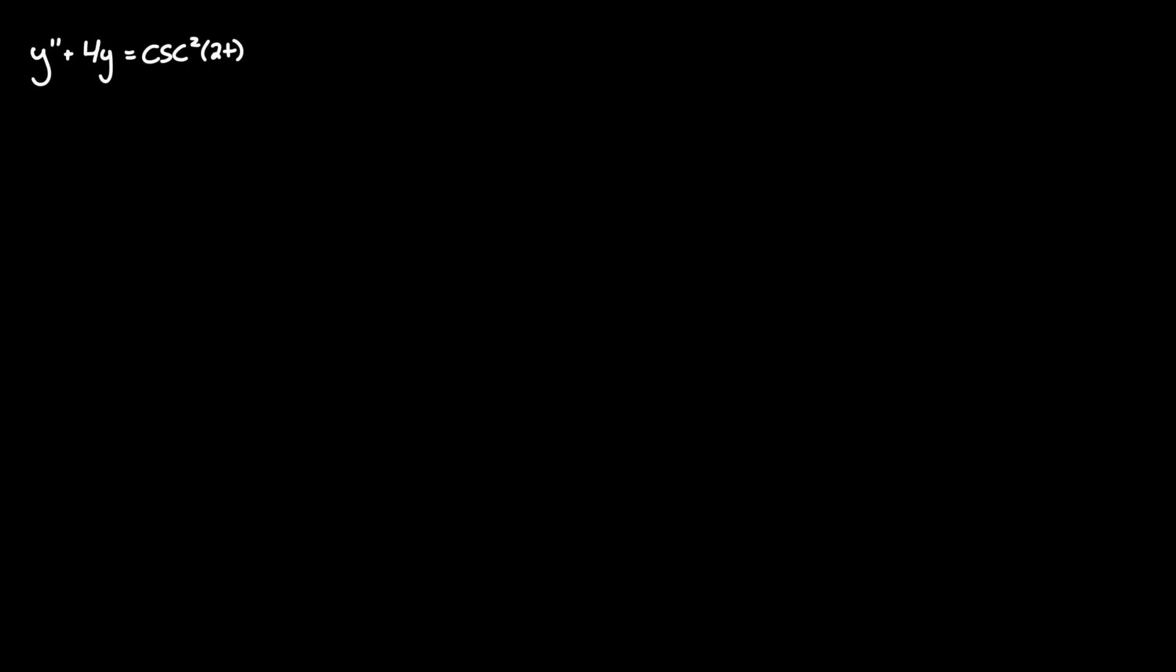Find the general solution to the differential equation y'' plus 4y equals cosecant squared of 2t. We will be using variation of parameters, and as always, we begin with the homogeneous solution in which we take